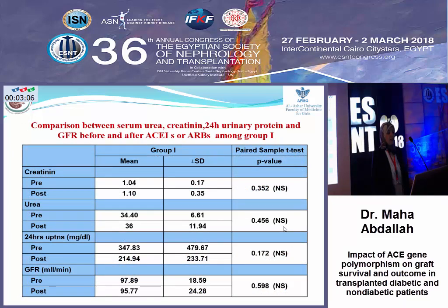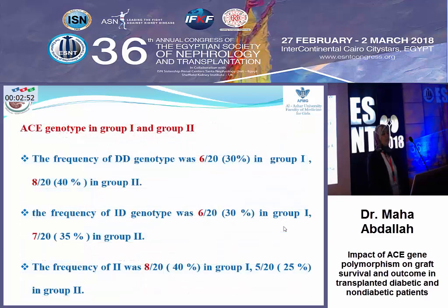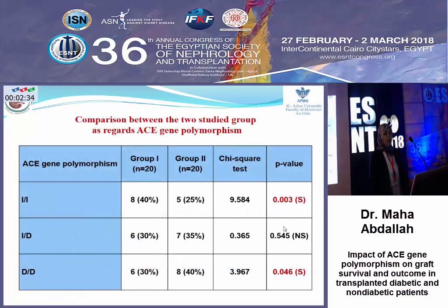Our research shows there was no significant difference in serum creatinine, blood urea, 24-hour protein, and GFR in Group 1 (normal graft function) after receiving ACE inhibitors or ARBs for about six months. Regarding ACE genotype in this group, the frequency of the DD genotype was 6 in Group 1 and 8 in Group 2. The frequency of the ID genotype was 6 in Group 1 and 7 in Group 2. The frequency of II was 8 in Group 1 and 5 in Group 2. There was a significant difference: the II genotype was more frequent in Group 1, while the DD genotype was more increased in Group 2 (graft dysfunction) compared to Group 1.